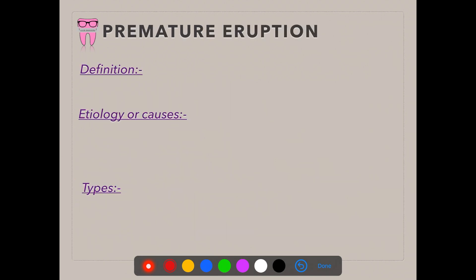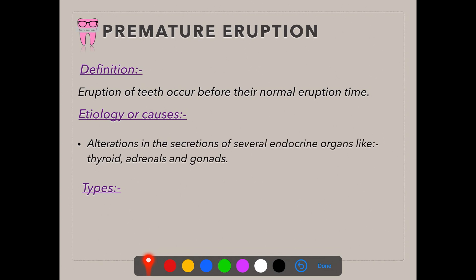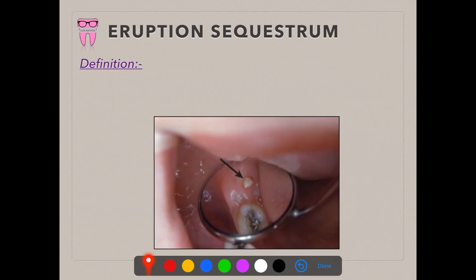Now coming to developmental disturbances affecting the growth of the teeth. Premature eruption is eruption occurring before the normal eruption time. In primary teeth this includes natal and neonatal teeth. In permanent teeth, premature eruption is due to disturbances caused by excessive secretion of endocrine organs such as the thyroid, adrenals, and gonads.